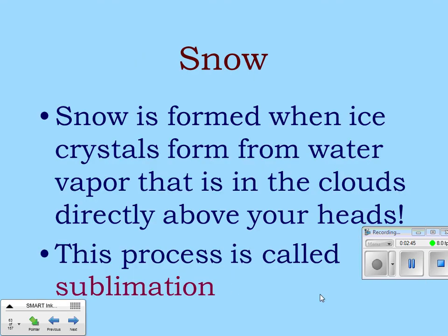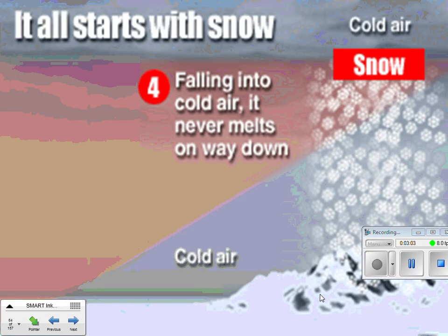Snow is formed when ice crystals form from water vapor in the clouds — a process called sublimation, going from water vapor directly to a solid. Falling into cold air, it never melts on the way down. The troposphere is cold up top where weather happens, and it stays cold all the way to the surface, so the snow never melts and reaches us as snow.